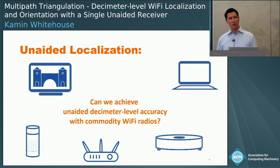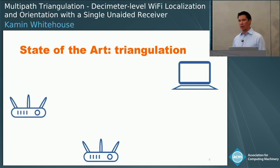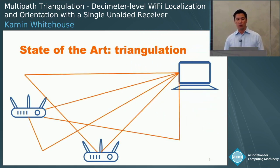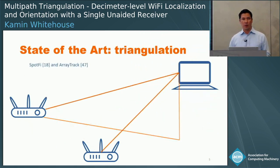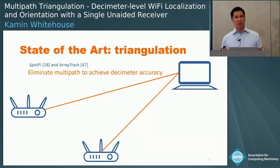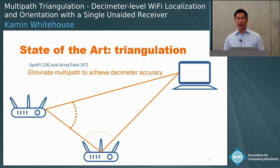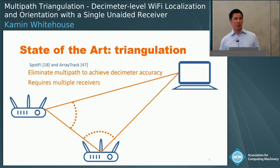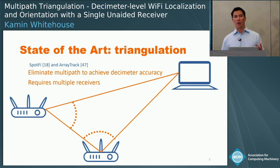Today there are basically two kinds of Wi-Fi localization that give you decimeter-level accuracy. The first are variants of triangulation. Multipath interference has long been a challenge for triangulation in indoor environments, but recent work including Spotfi and ArrayTrack have shown that you can eliminate the multipath interference to isolate the line-of-sight path and better estimate the angles to the target, enabling decimeter-level accuracy. But this approach still requires multiple receivers — typically five or six — and so they're not doing what we call unaided localization.